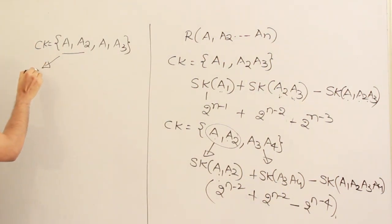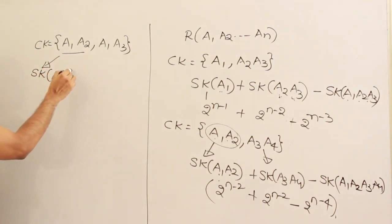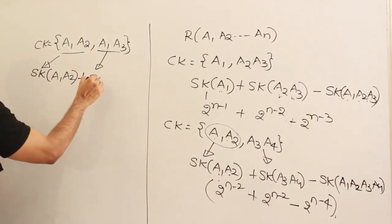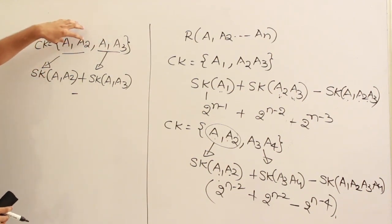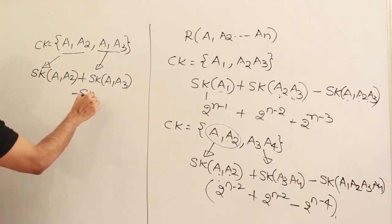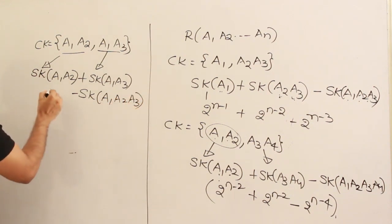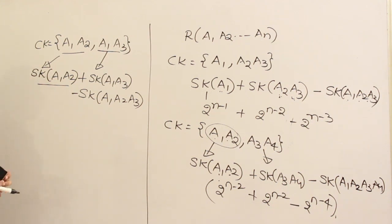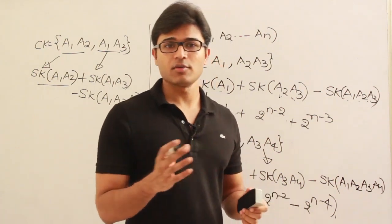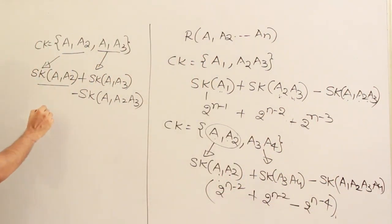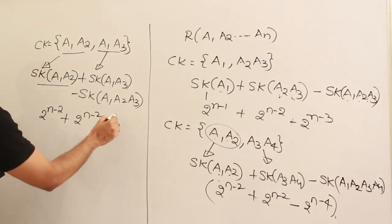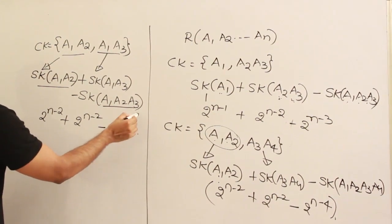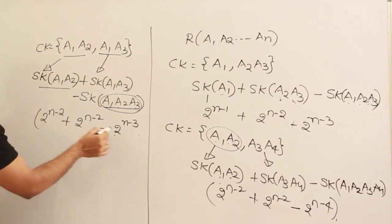Find all super keys definitely containing {a1, a2}: that gives 2^(n−2). Find all super keys definitely containing {a1, a3}: that also gives 2^(n−2). Now subtract those containing all three — {a1, a2, a3} — since a1 is shared, it is only three distinct attributes, leaving n−3 attributes, giving 2^(n−3). Total: 2^(n−2) + 2^(n−2) − 2^(n−3).